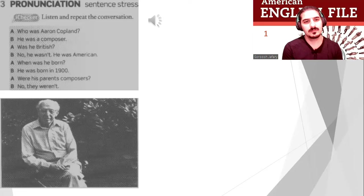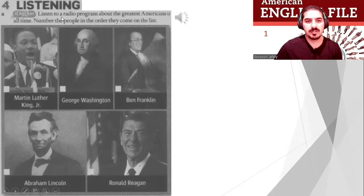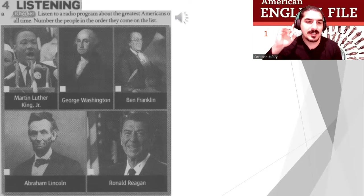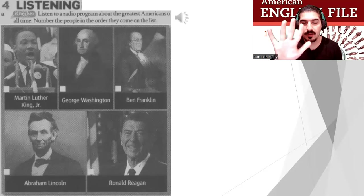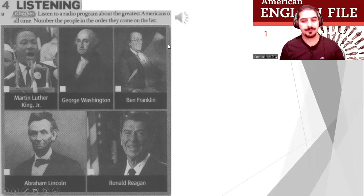Now we have a listening. Listen to a radio program about the greatest Americans of all time. Number the people in the order they come in — number one through five. Let's do it. File 7A listening.